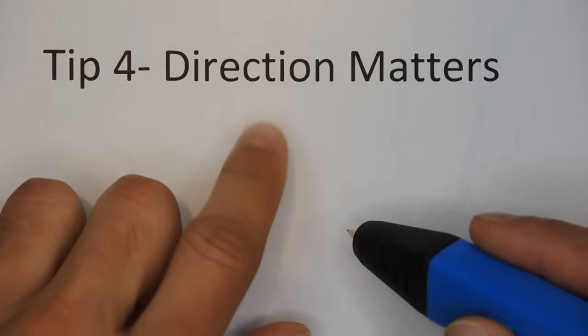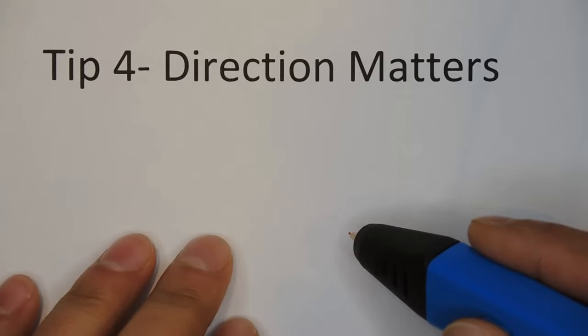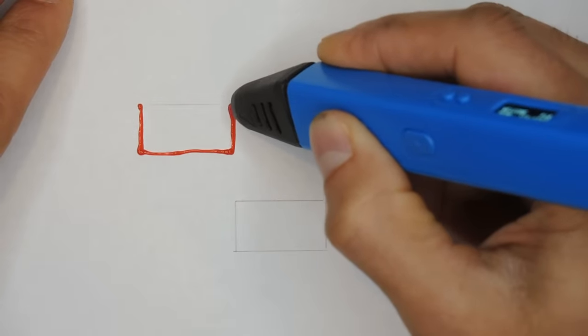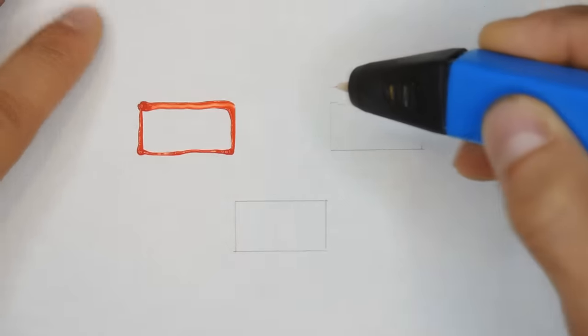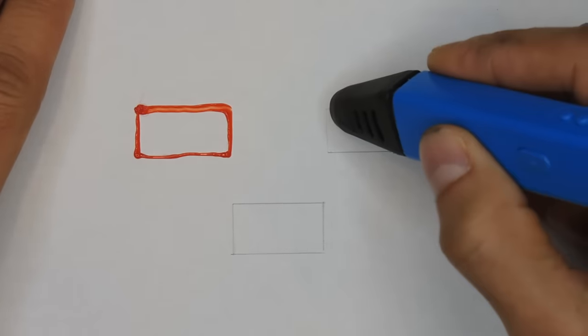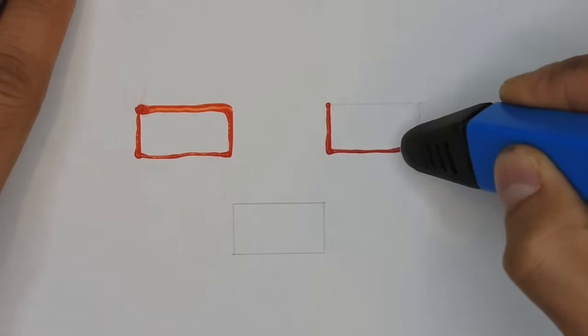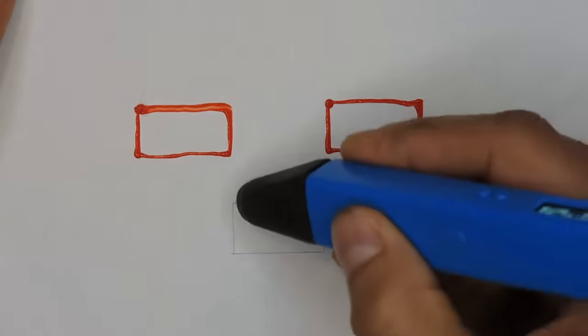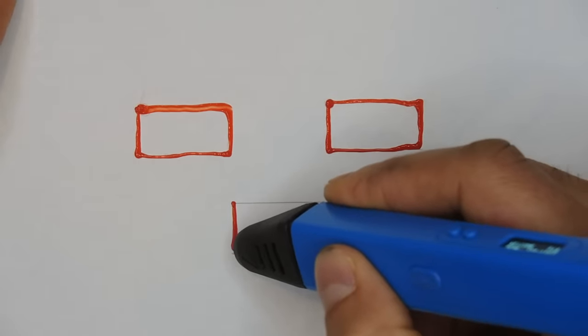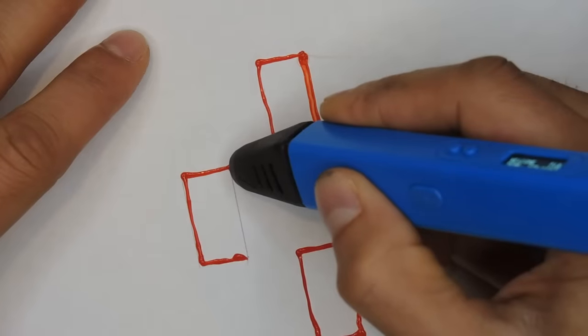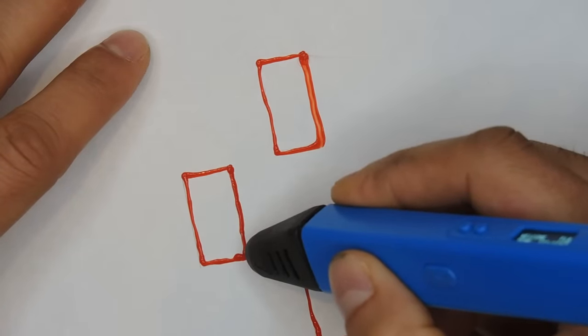The fourth tip is to be mindful of the direction that you're penning in. As you can see from this test case, when I pen left, the nozzle itself can smear the filament that's being pushed out. If I'm mindful of this and lift the nozzle slightly off the paper when going left, the smear disappears. But as you lift the nozzle off the paper, your stability and control are reduced. Another way around this is to change the orientation of the paper. I can rotate the paper and avoid the smear. This also improves visibility into what you're penning, so don't be afraid to rotate.